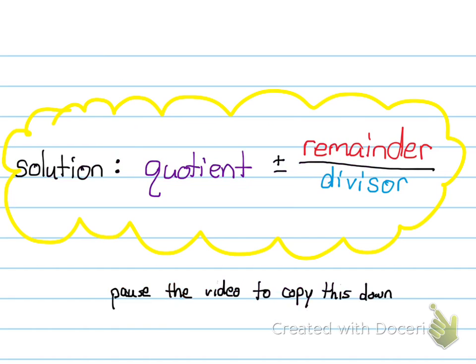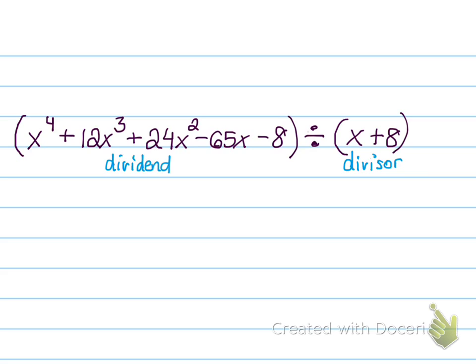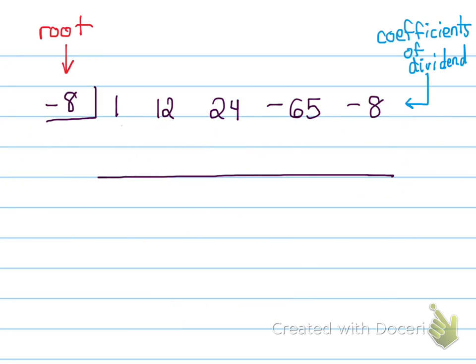And let me go back to the original problem to show you where I got those numbers from. There's an imaginary 1 in front of that x to the fourth power, so that was my first coefficient, and then the 12, 24, negative 65, and my constant negative 8. That's where those coefficients came from.